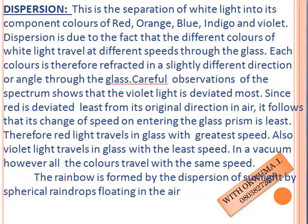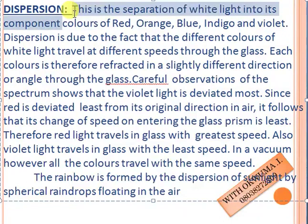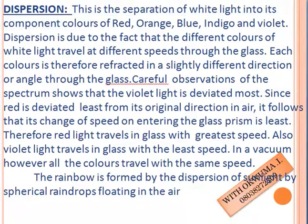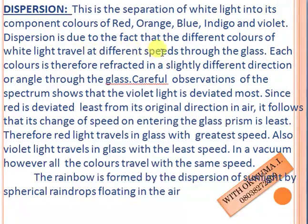Our topic is dispersion of white light. Dispersion is the separation of white light into its component colors of red, orange, yellow, green, blue, indigo, and violet. Dispersion is due to the fact that different colors of white light travel at different speeds through glass, and each color is therefore refracted in a slightly different direction or angle.